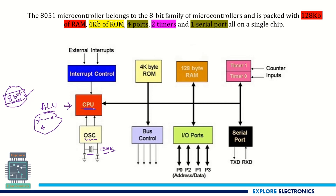For this CPU, we need to connect two buses — one is the data bus and another is the address bus, used for instructions as well as data. These two buses are controlled by the bus controller. Since it is an 8-bit microcontroller, the data bus is 8-bit wide and the address bus is 16-bit wide, so it handles 16-bit addresses and 8-bit data.